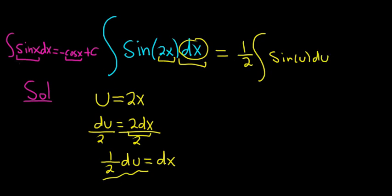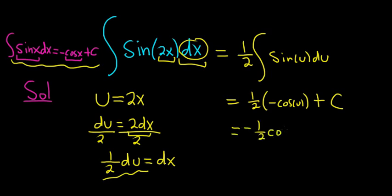And now we apply our formula that we discussed at the beginning. So this is 1 half negative cosine u plus our constant of integration c. So this is the same thing as negative 1 half cosine. And recall u was equal to 2x, so negative 1 half cosine of 2x plus c.